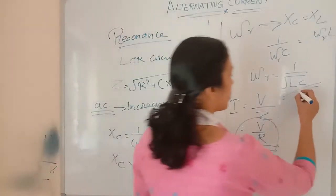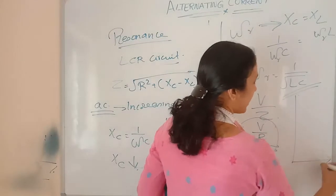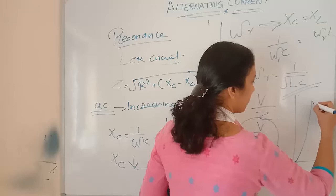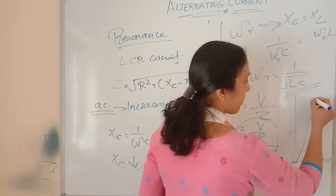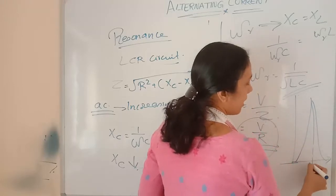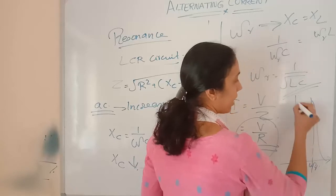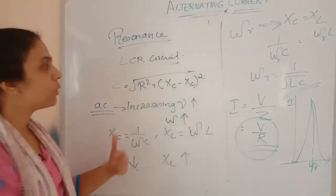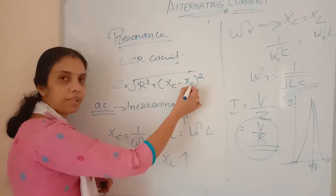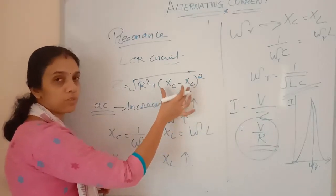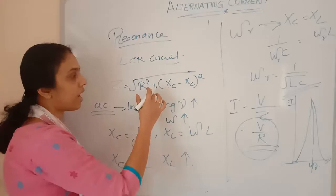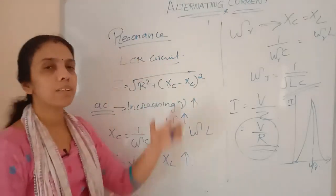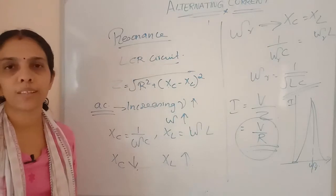If I draw a current diagram, we will be getting the maximum current at the resonant value at omega_R. The current will be maximum. At other values, (XC minus XL) will be present — even if it is small, it will add to R squared plus (XC minus XL) squared, increasing the impedance. This explains the resonance behavior clearly.